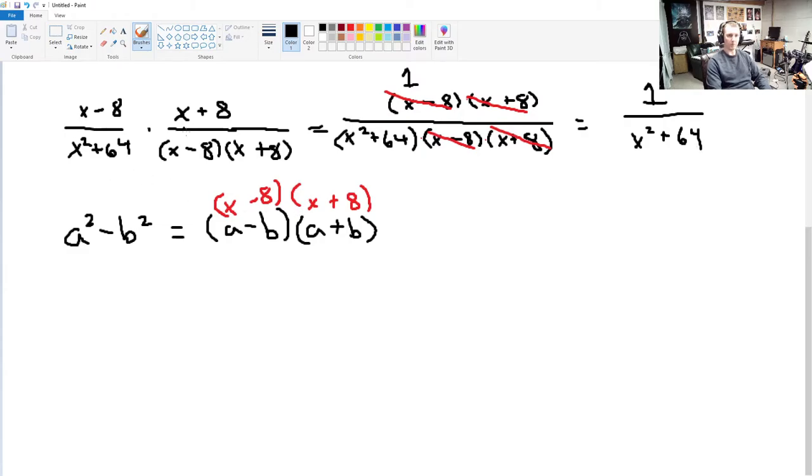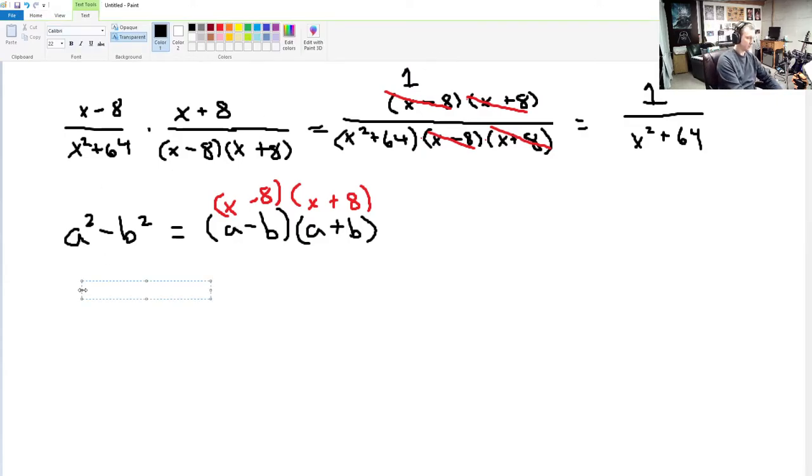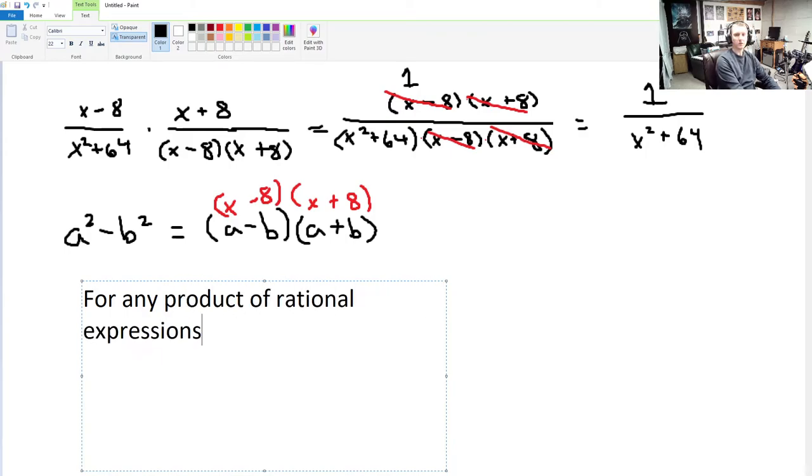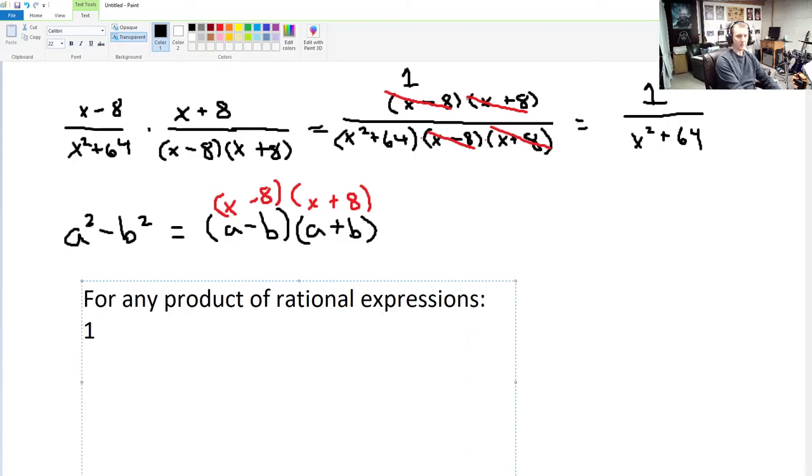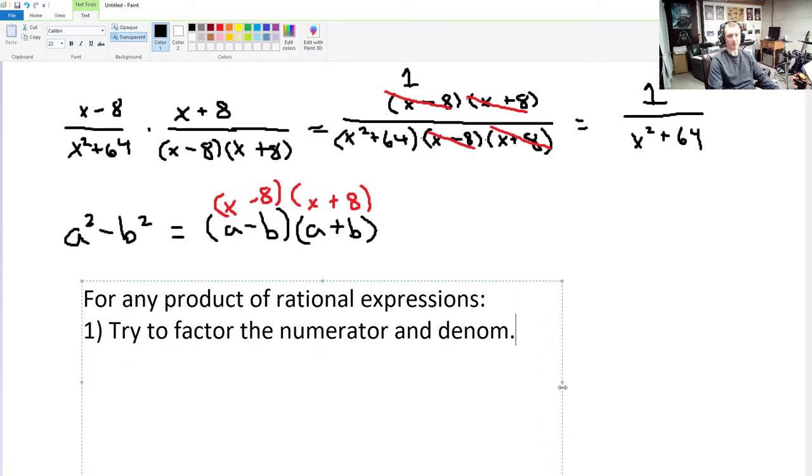You know, in any problem like this, where you've got a product of rational expressions, the first step is always going to be, you know, try to factor the numerator and denominator. Okay? This is the very first thing that you should do, right?